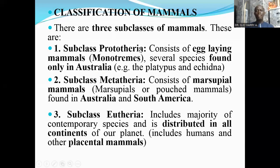The subclass Prototheria consists of egg-laying mammals called monotremes. Several species of these monotremes are found only in Australia, and they include the platypus and the echidna.